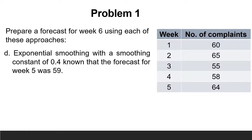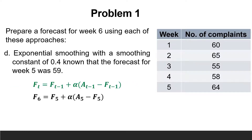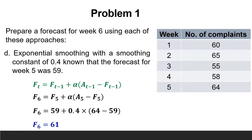The last requirement is to calculate the forecast for week 6 using exponential smoothing with a smoothing constant of 0.4, given that the forecast for week 5 was 59. Applying the exponential smoothing equation: F6 = F5 + α × (A5 − F5) = 59 + 0.4 × (64 − 59) = 61.